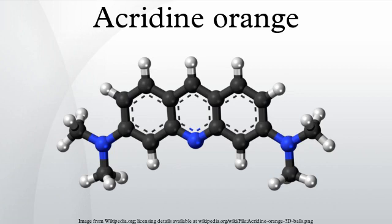Acridine orange is an organic compound used as a nucleic acid selective fluorescent cationic dye, useful for cell cycle determination. Being cell permeable, it interacts with DNA and RNA by intercalation or electrostatic attractions respectively.